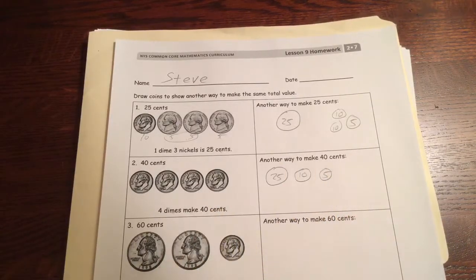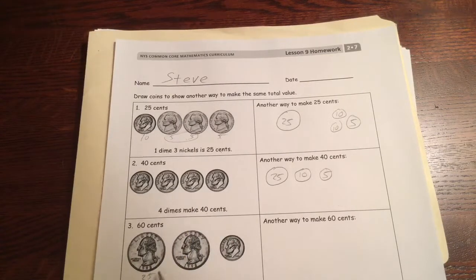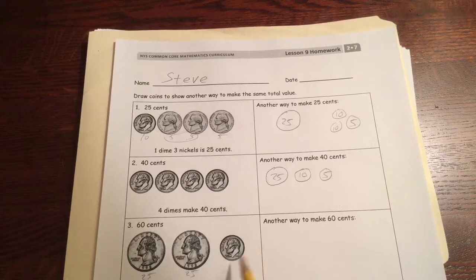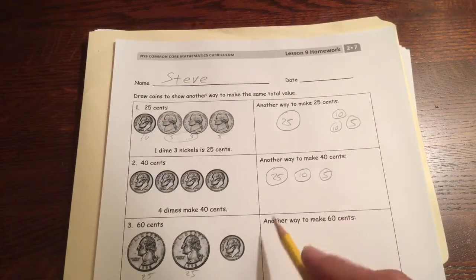60 cents. Two quarters and a dime. The quarters are 25's. Two 25's makes a 50, and then 10 more is 60 cents. Another way to make 60 cents, you could do it with six dimes.